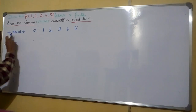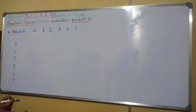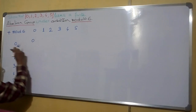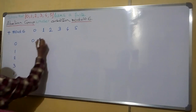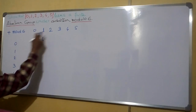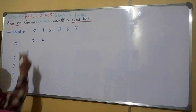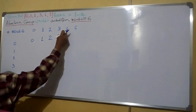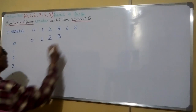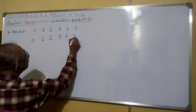0 plus 0 is 0; dividing by 6 the remainder is 0. 0 plus 1 is 1; the remainder is 1. 0 plus 2 is 2; the remainder is 2. 0 plus 3 is 3; the remainder is 3. 0 plus 4 is 4; the remainder is 4. And 0 plus 5 is 5; the remainder is 5.